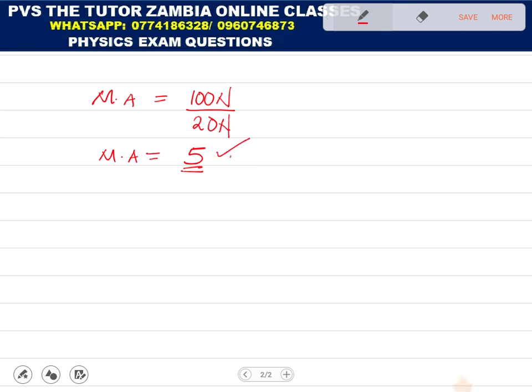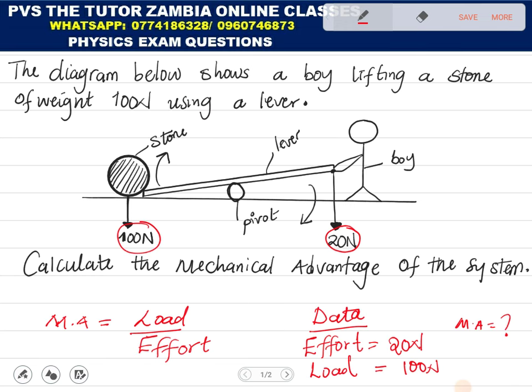This is how you find the mechanical advantage, and it's done. The other thing they can ask you to find is the velocity ratio, which I won't talk about in this video. But I hope that you join me in another video when I will be talking about the velocity ratio. Thank you.